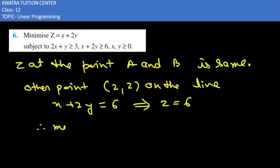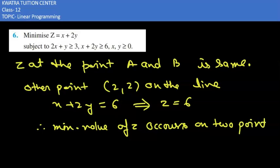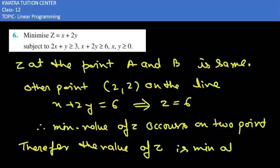Therefore minimum value of z occurs on 2 points. And hence we can see we can write over here therefore the value of z is minimum at every point on which line which is x plus 2y is equal to 6.